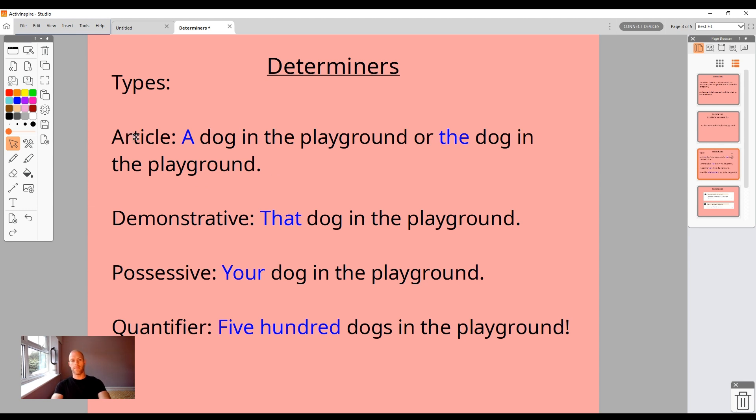But if I just change the determiner, still an article here, if I said the dog is in the playground, that suggests that we know which dog we're talking about. A dog in the playground - random dog. The dog - maybe it's a school dog, so actually just 'oh yeah, the dog's in the playground,' maybe less exciting, still obviously very exciting.